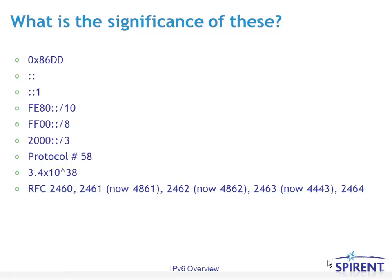These five RFCs are the base IPv6 protocols — the minimum required for an IPv6 implementation. RFC 2460 is the base IPv6 specification, just like RFC 791 is the base IPv4 specification. RFC 2461 is the specification for IPv6 neighbor discovery, similar to ARP with IPv4. RFC 2462 is the stateless address auto-configuration specification. RFC 2463 is the specification for ICMPv6, and RFC 2464 is the specification for carrying IPv6 packets over Ethernet.